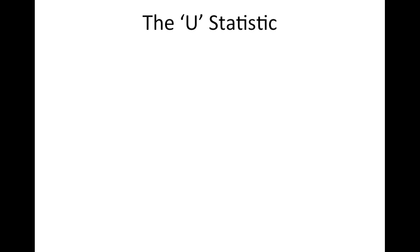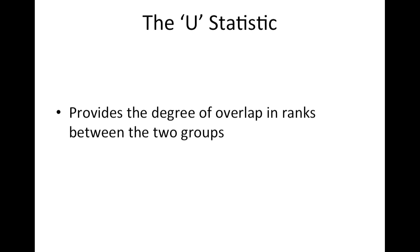Essentially, what the U statistic tells us is the degree of overlap in the ranks between two groups. That is, it gives us a measure of how many data points in one group have a higher or lower rank than data points in the other group. I'll use some diagrams to illustrate this point.